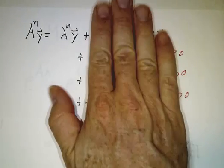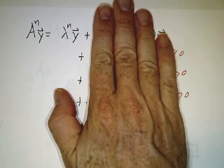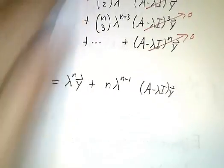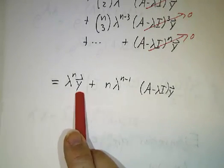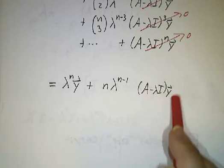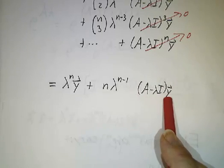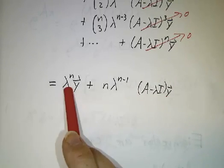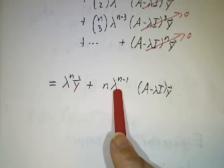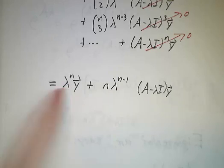For an eigenvector, we only had the very first one. For a power vector of degree 2, we have two terms. And we get lambda to the n y plus n lambda to the n minus 1 times this vector, whatever it happens to be. So it doesn't go just as a power of lambda, you get a polynomial piece. You get an n times the power of lambda and you get a power of lambda.